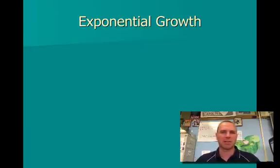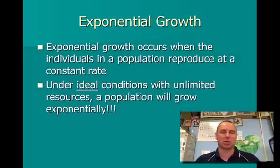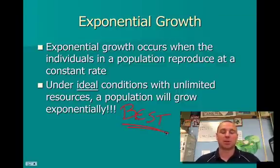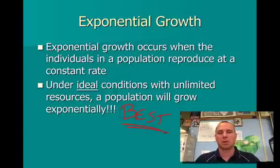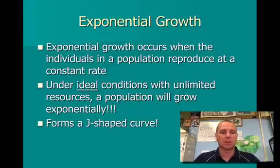When we talk about population growth, we can put them on two different charts. The first is called exponential growth — when a population is growing without any limits whatsoever, under ideal conditions, meaning the very best conditions. The only population I can think of that grows naturally in exponential growth is humans. We haven't reached our carrying capacity yet, so we're continuously growing upward — we have all the food, shelter, water, and mates we need. The exponential growth curve is called a J-shaped curve, which you'll see in a couple of slides.